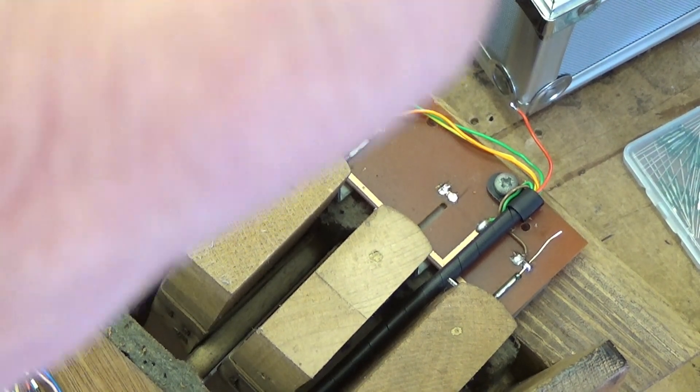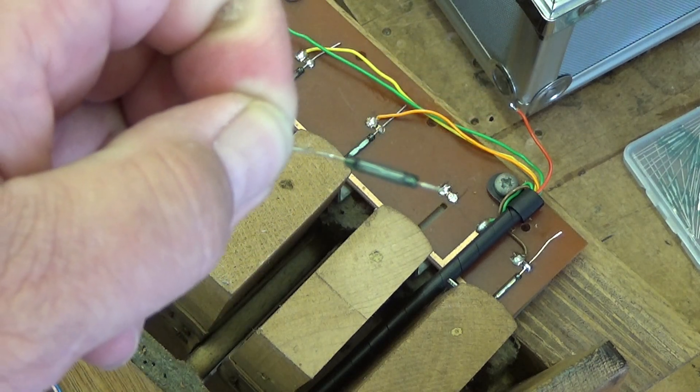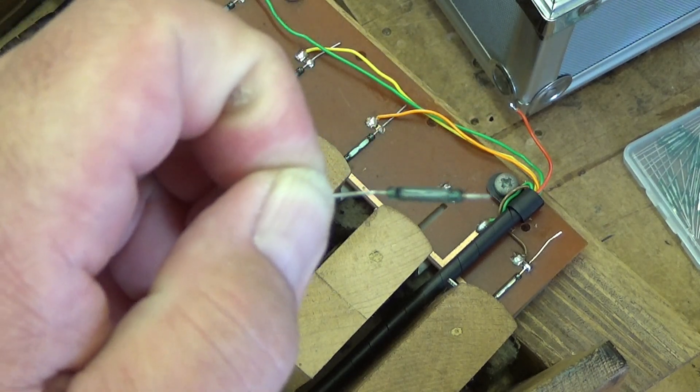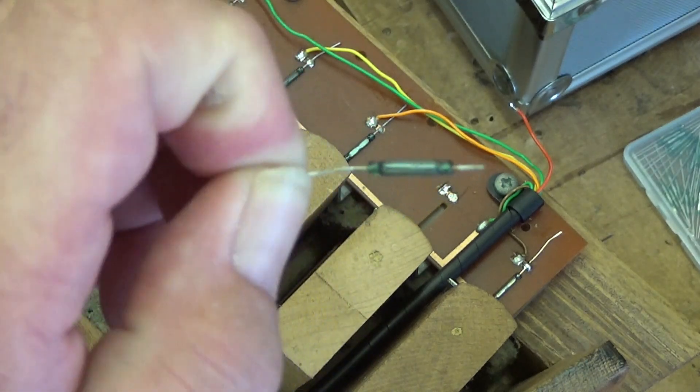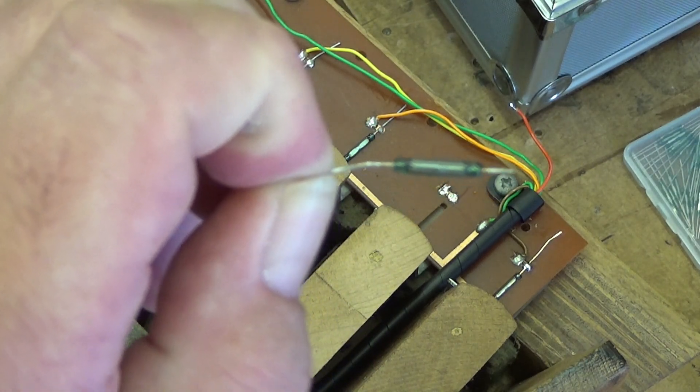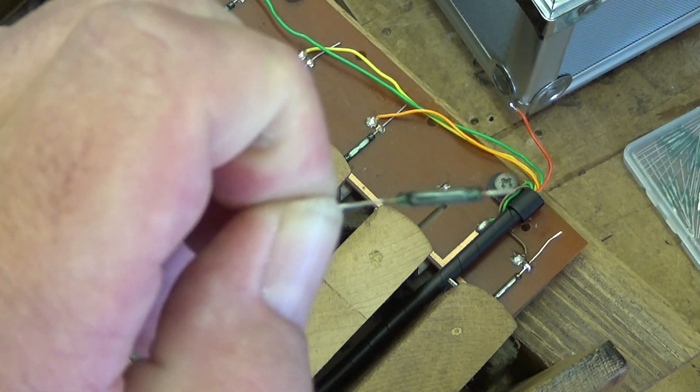OK, so that's the reed switch removed. It doesn't want to focus very well. But we'll take a look at this under the microscope in a minute and see if we can get any clues as to what's gone wrong with it. In the meantime, I'm just going to replace it with a new one and make sure that works.